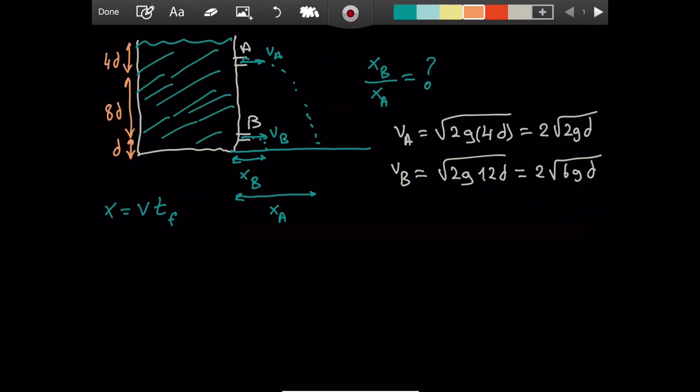We will now use this result for our case. So what is tA? It is the square root of 2 - what is the height? Not the depth, but the height. That is 8 plus 1, 9d, divided by g. So that gives us 3 times the square root of 2d divided by g. What about tB? That is going to be the square root of 2dg divided by g. Cool. Now we have everything.